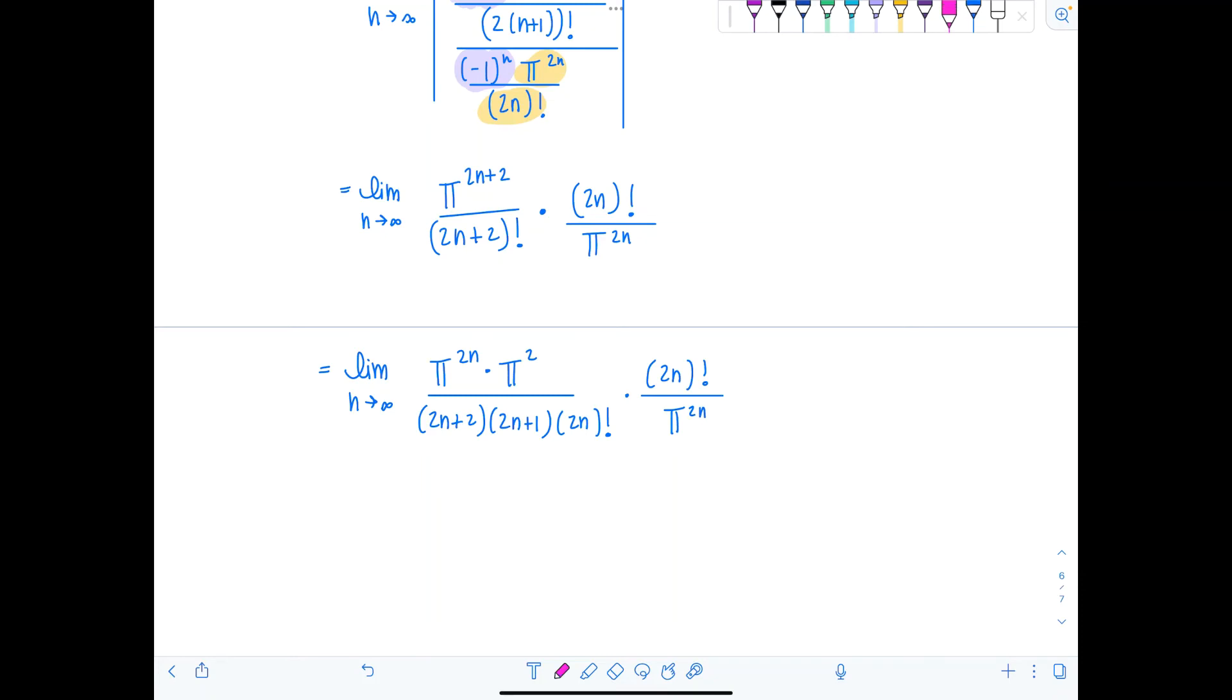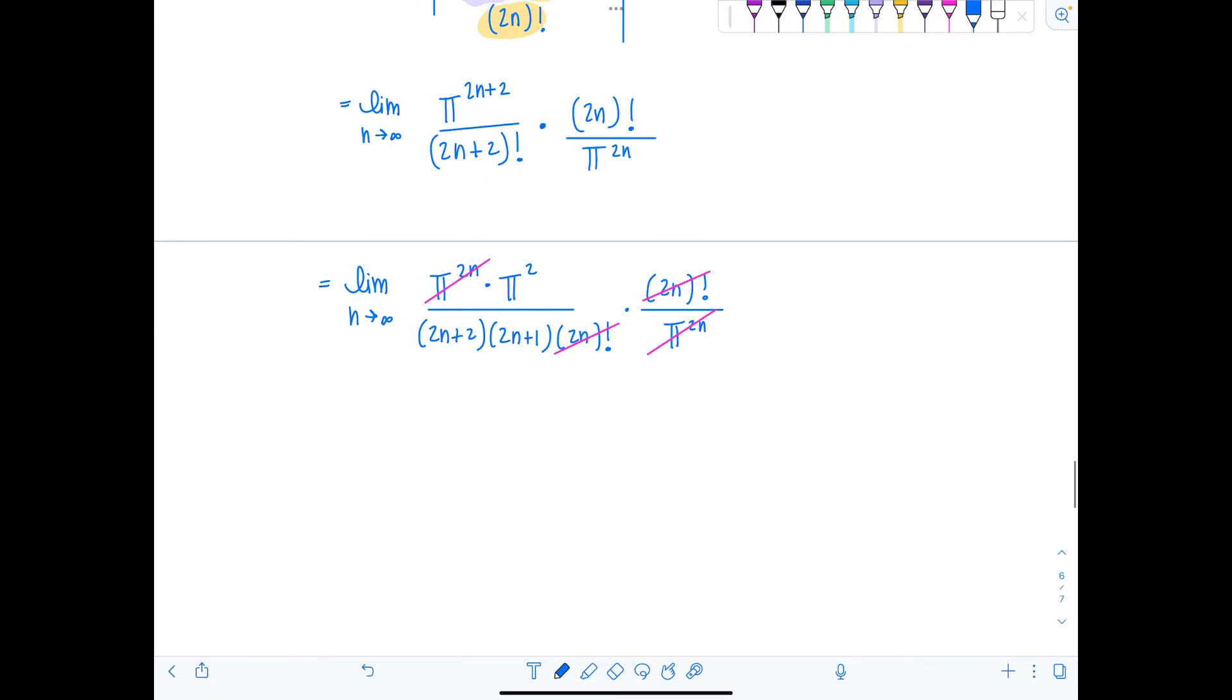So nice. So now we have a little cancel party. Get the strobe lights out. So pi to the 2n gone. And then 2n factorial gone. And we should be in business shortly. So this equals the limit as n approaches infinity. Pi squared over. Do we want to multiply it out? We don't need to. 2n plus 2 times 2n plus 1. That's all that's left. Well, as n approaches infinity, this denominator is approaching infinity. And pi squared is just a constant sitting up there on the top. So a constant over infinity. That's going to go to 0.